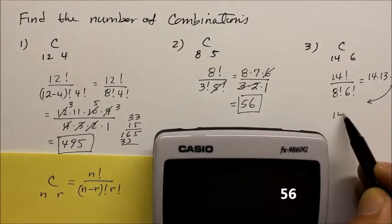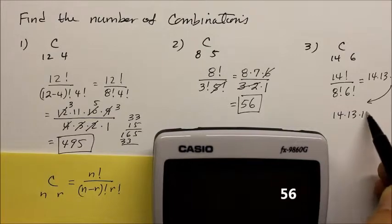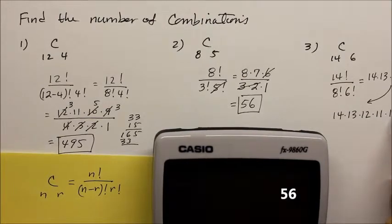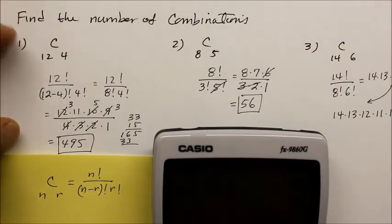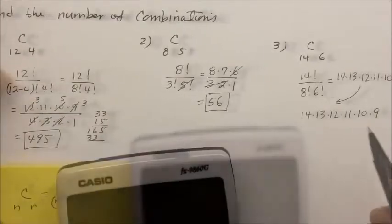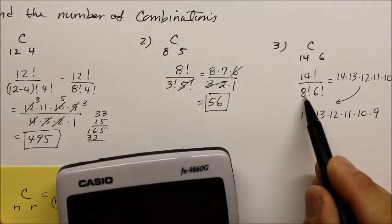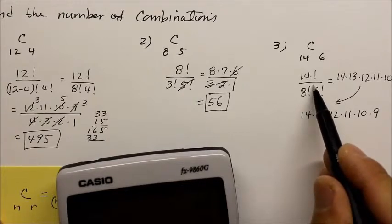14 factorial is like saying 14, 13, 12, 11, 10, and 9. Let's scoot this over then. And then, that's crossed off. The rest of that factorial is crossed off by that 8 factorial.